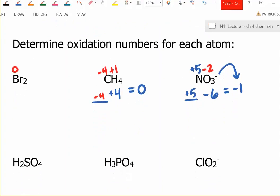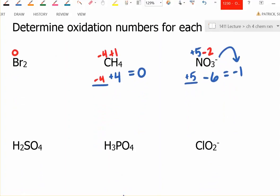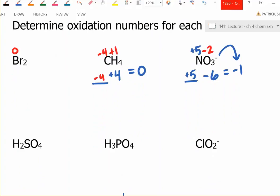Let's try some more. You can pause and work it on your own first and see how you do. On this one, I've got a compound. I know two elements. Oxygen is minus two. Hydrogen is plus one.